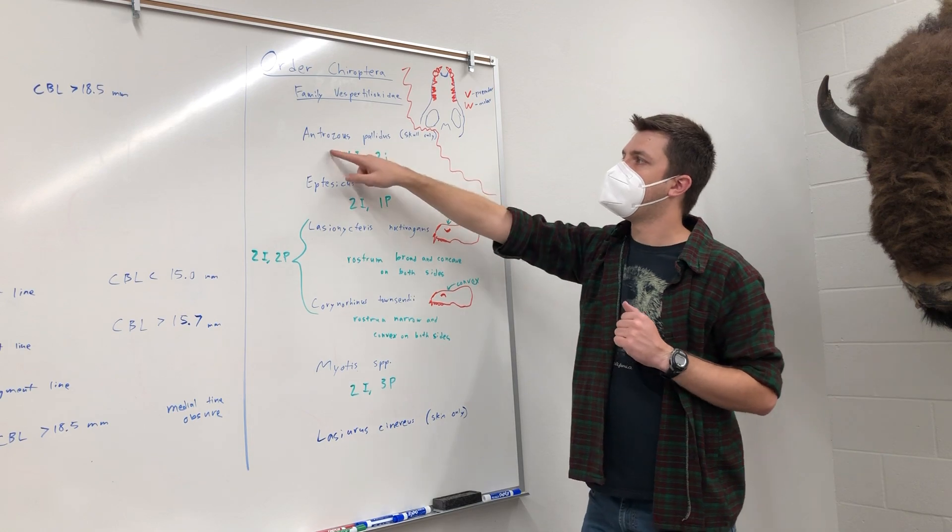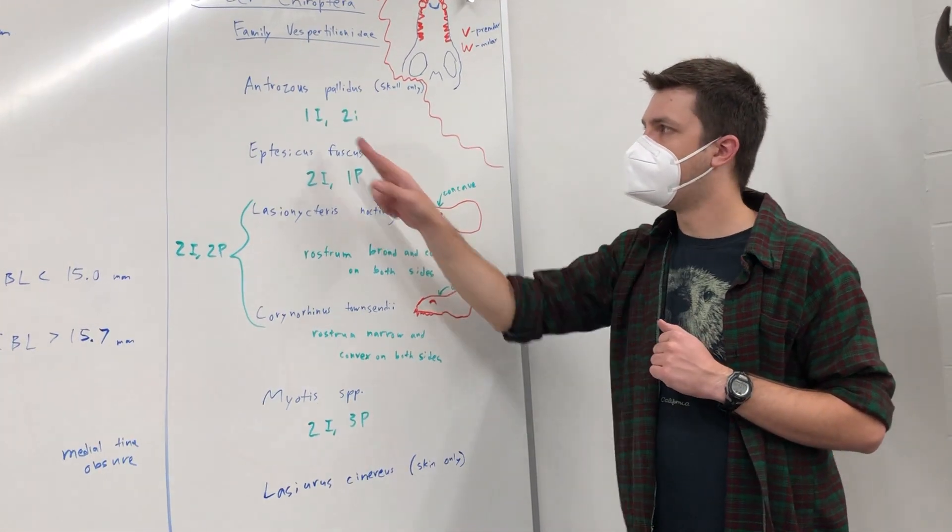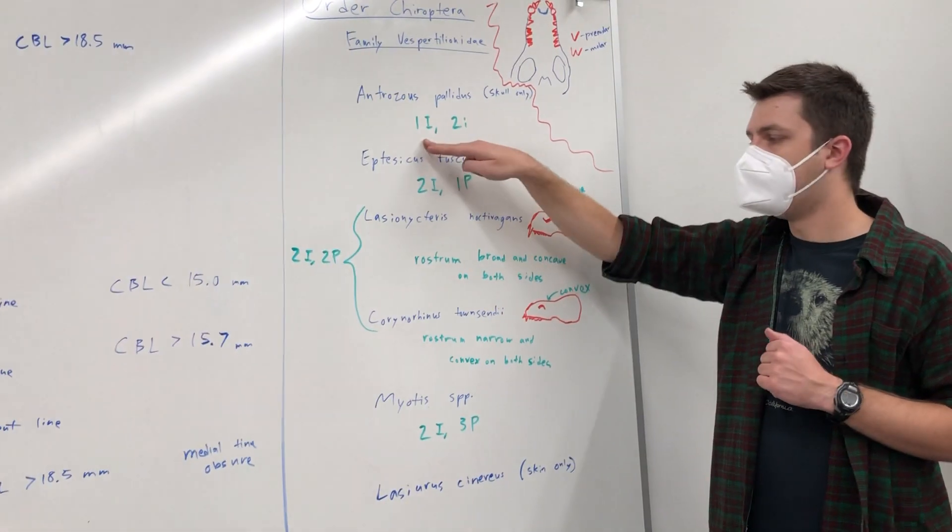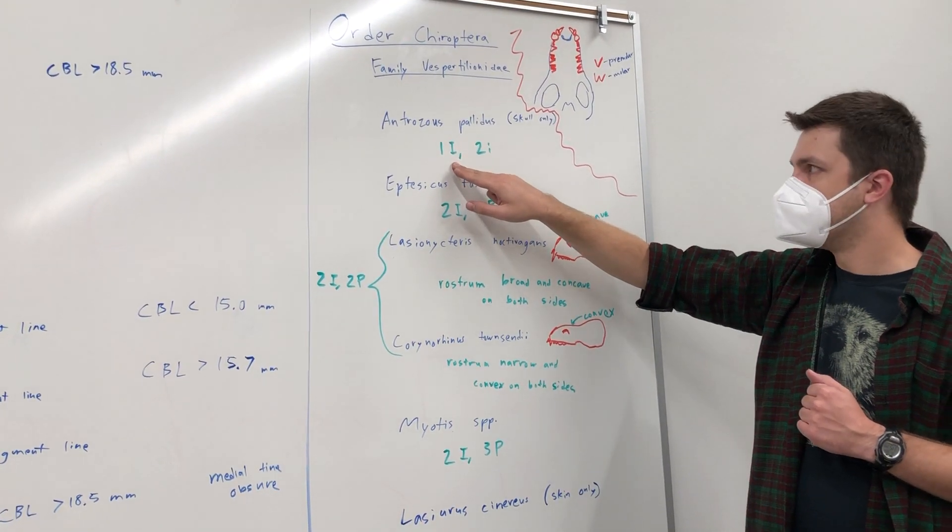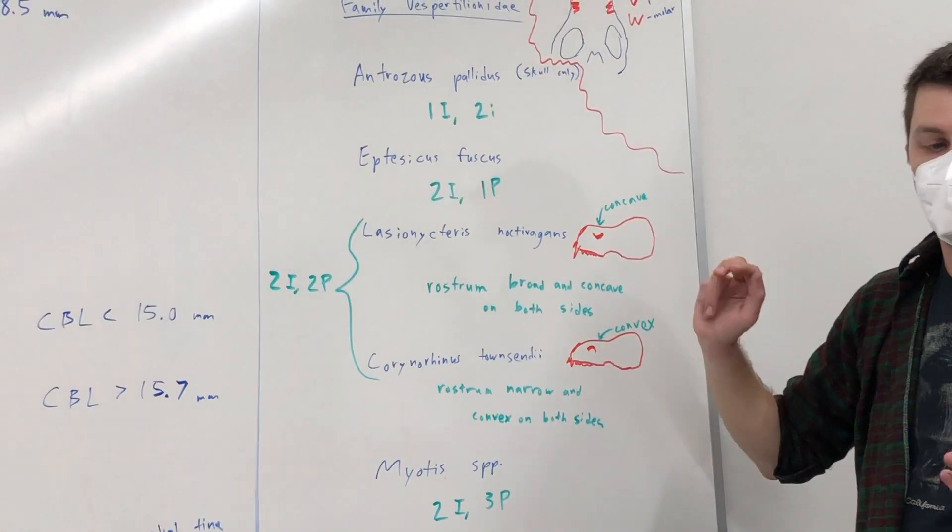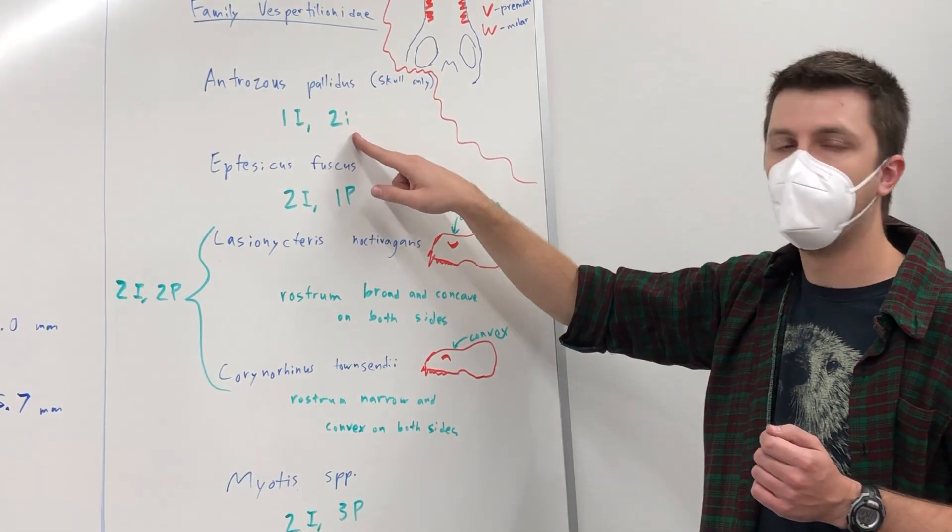The first one we have, Antrozous pallidus, has one upper incisor, unlike the rest of them. So that capital I means upper incisor. It also, if you want to check, has two lower incisors.